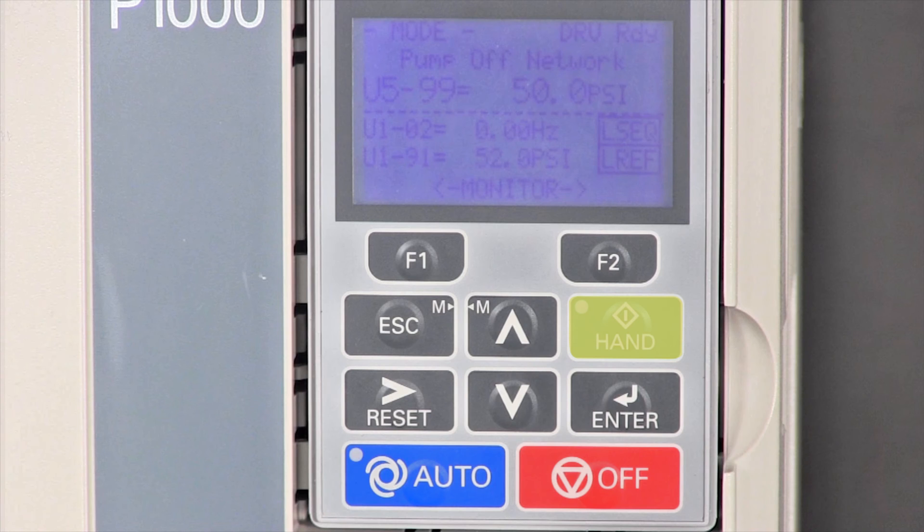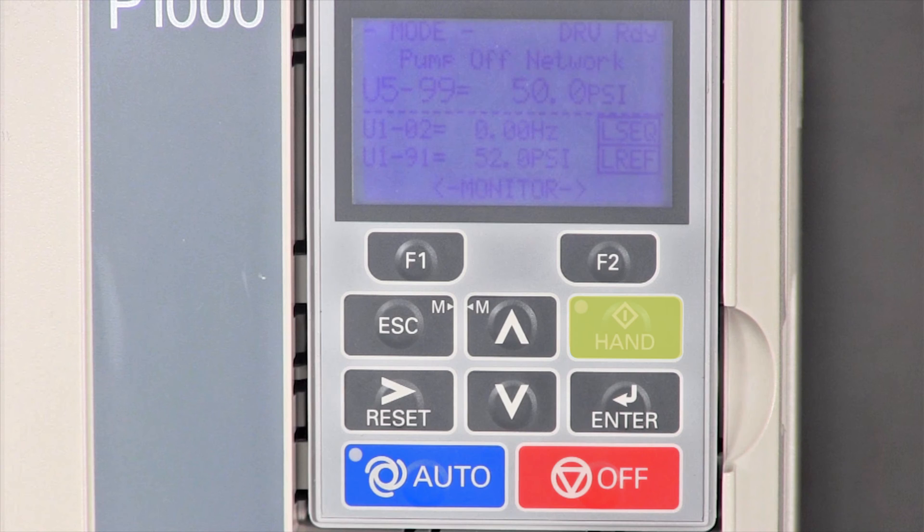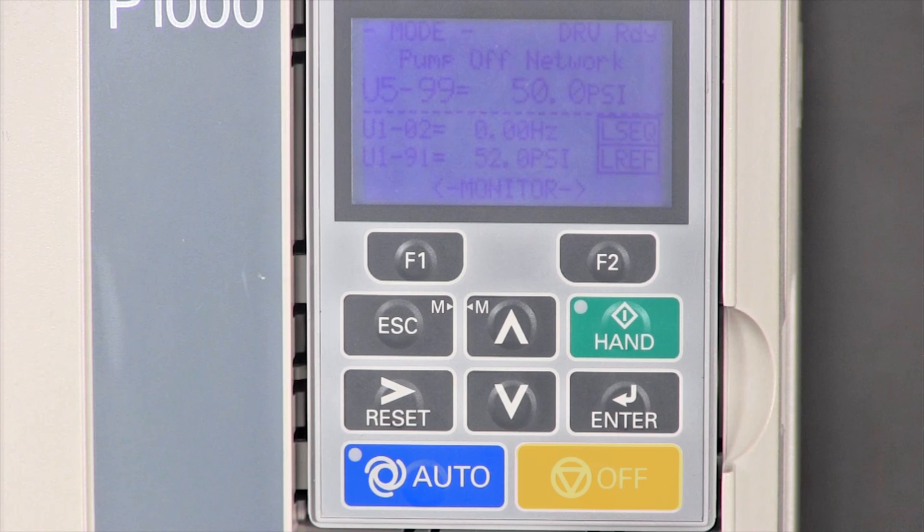Okay, the hand button. This will run the pump continually at a constant speed. This is used for troubleshooting and startup only. Never leave the pump running in hand mode. The off button is simply that. It turns off the pump.